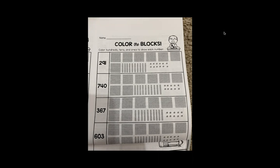The first number we have is the number 291. 291 has hundreds, tens, and ones. There are two groups of 100: 100, 200.